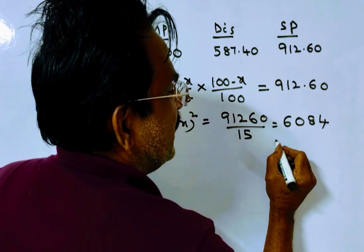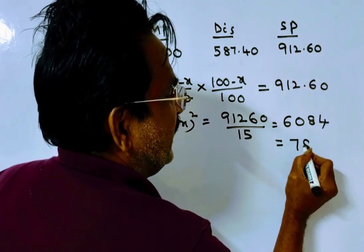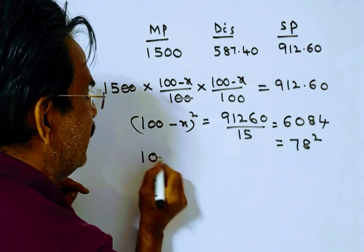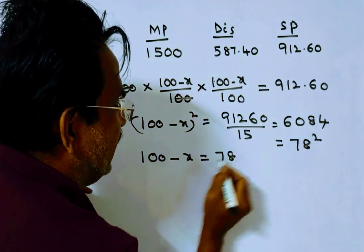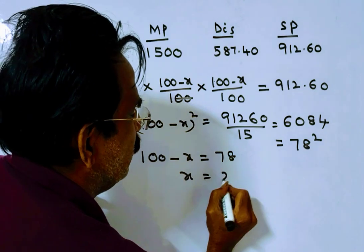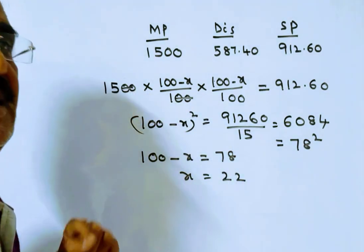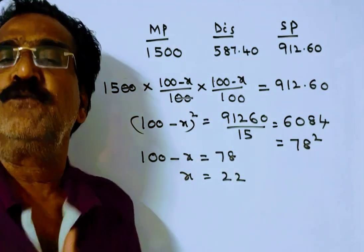This equals 78 squared. So it implies 100 - x is equal to 78. Therefore x is equal to 22. So the value of x is equal to 22.